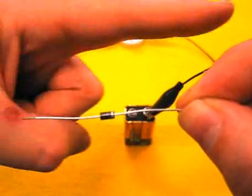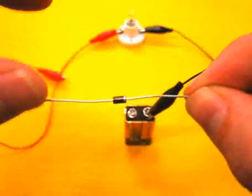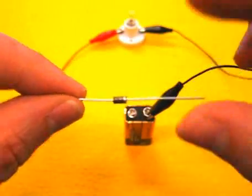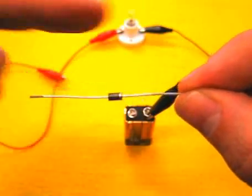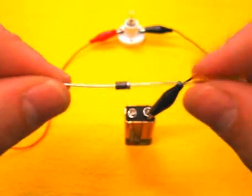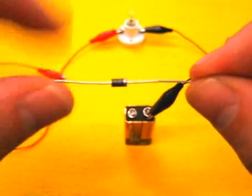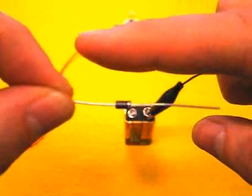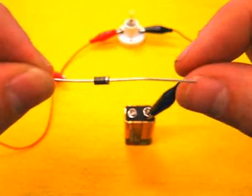The current will flow in that direction. So if I hook up positive on the left, negative on the right, current will flow. But if I hook positive on this side and negative on this side, trying to drive the current that way, it will block the current.